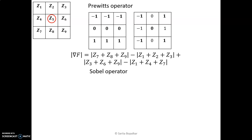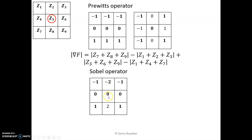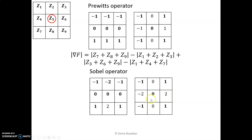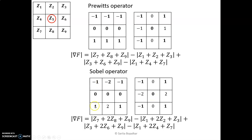For the Sobel operator, it is the same as Prewitt, only higher weights are assigned to the pixels close to the candidate pixel. For x-directional, the pixels close to the candidate pixel receive higher weights. Mathematically: z7 + 2·z8 + z9 minus z1 minus 2·z2 minus z3. Similarly, in the y-direction: z3 + 2·z6 + z9 minus z1 minus 2·z4 minus z7. This is the mathematical representation for the gradient using the Sobel operator.